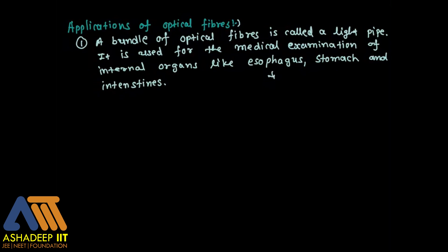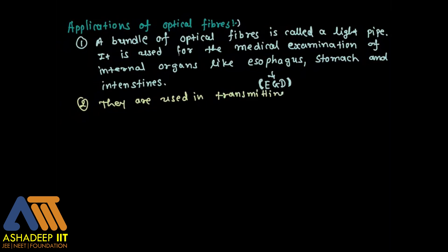This light pipe is used for the medical examination of internal organs like the esophagus, stomach, and intestines. The procedure used is esophago-gastro-duodenoscopy (EGD), which is used for medical examinations up to the first part of the stomach and intestine.